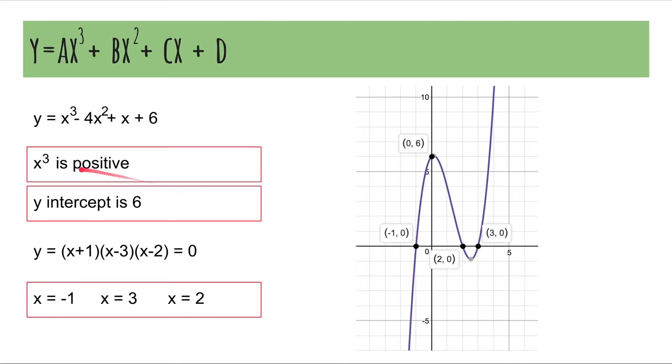So, because the x cubed term is positive, the graph starts from the bottom. And then it goes through the first x solution. And then it turns, goes through the second x solution, turns again, goes through the third x solution. That's how it works.